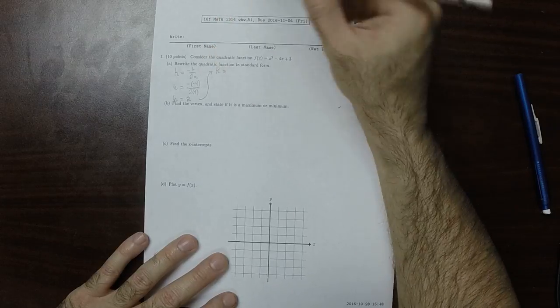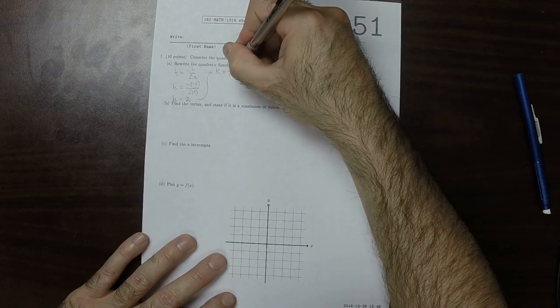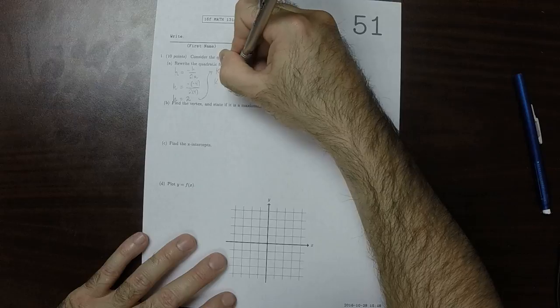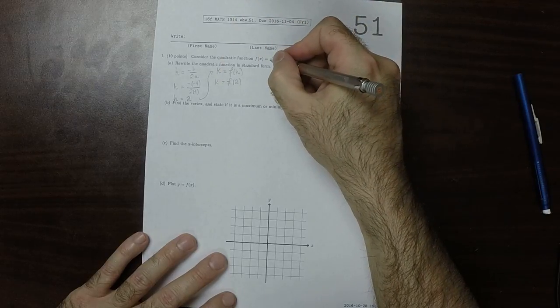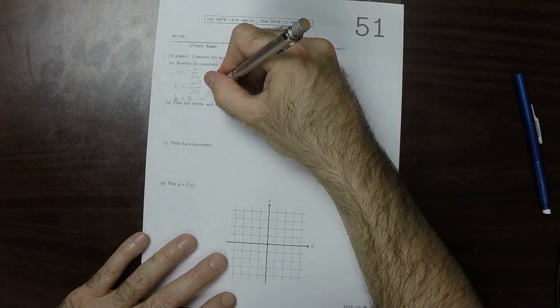The vertical coordinate of the vertex, K, is what you get when you plug in the horizontal coordinate, so what you get when you plug in 2. Plugging in 2, that would be 4 minus 8 is negative 4, and then plus 3 is negative 1.